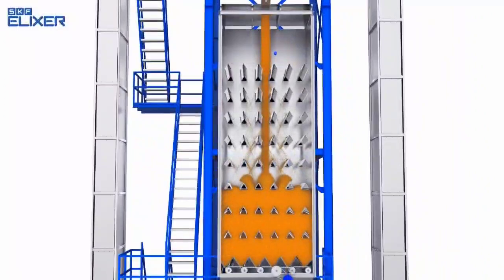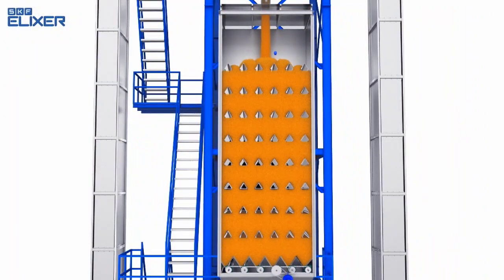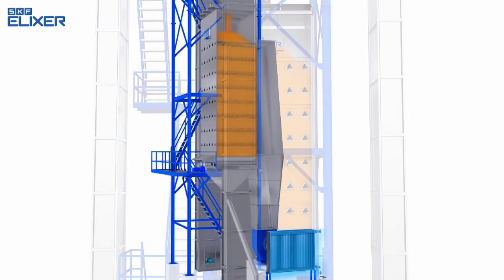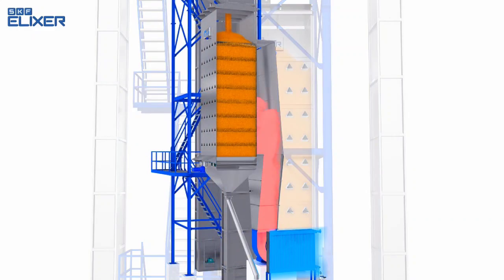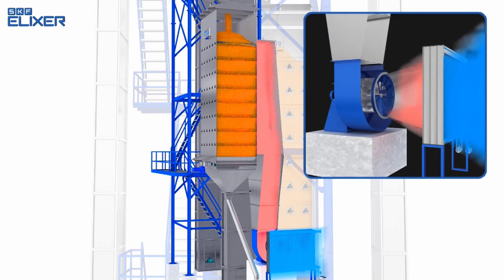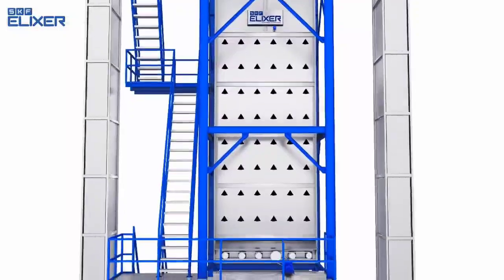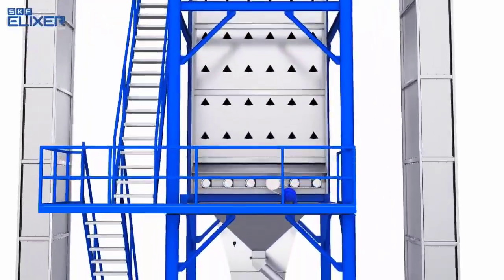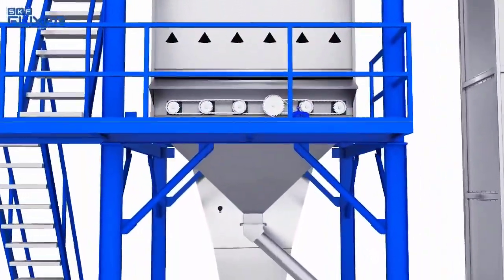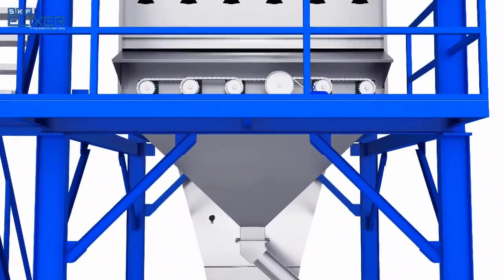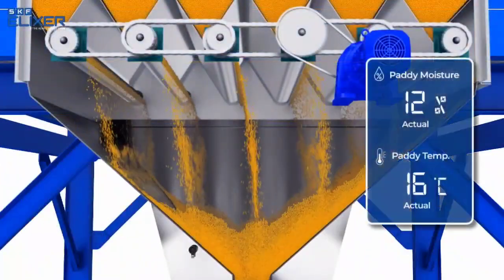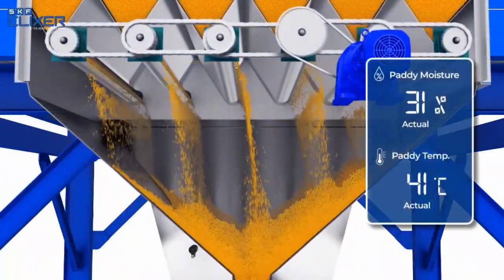Paddy fills inside the MRD until it reaches the high level sensors. The MRD blower is activated and steam is passed into the steam heat exchanger to achieve the set temperature. The MRD rotor activates after a set time from the blower's activation, ensuring the initial outer moisture of the paddy is removed, reducing the paddy's moisture by four to six percent.